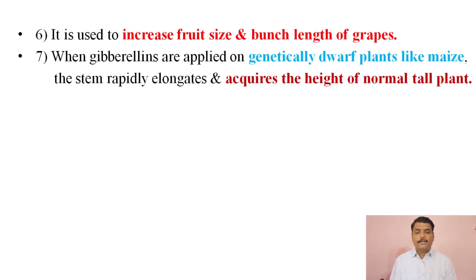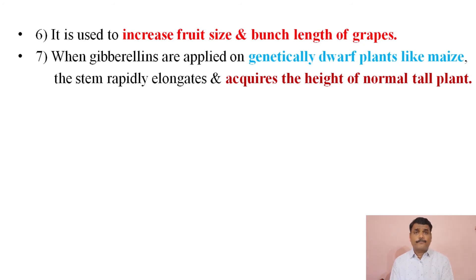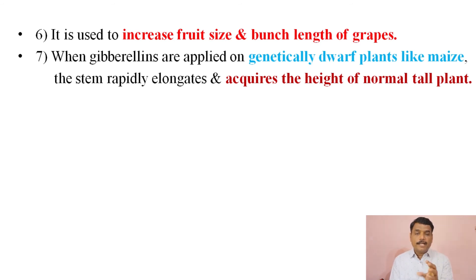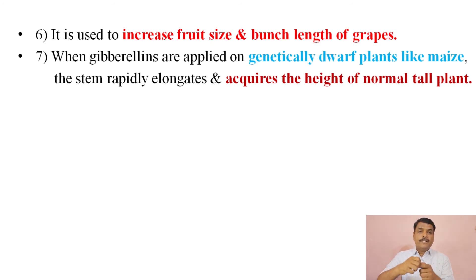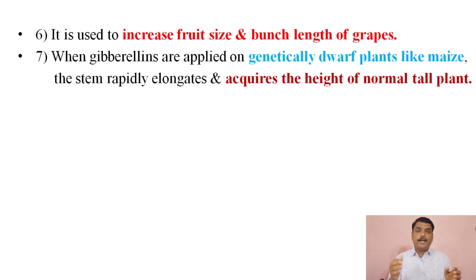When gibberellins are applied on genetically dwarf plants like maize, the stem rapidly elongates and acquires the height of normal tall plants. This is another important application of gibberellins. Because gibberellins promote elongation of the stem and internodes, applying them to a genetically dwarf plant causes it to grow to normal height.